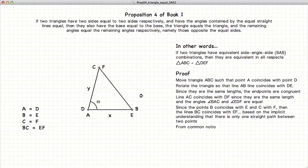And thus we have demonstrated, from common notion number 4, that our two triangles are equal in all respects, since anything which coincides with one another equals one another. That's common notion number 4.